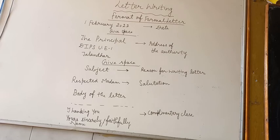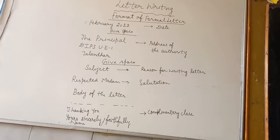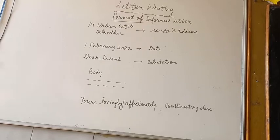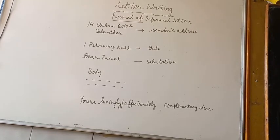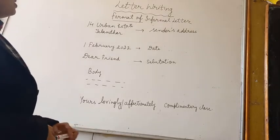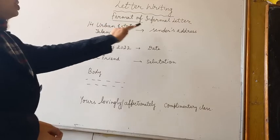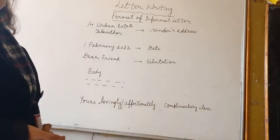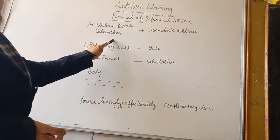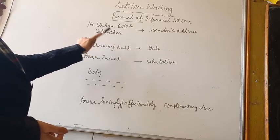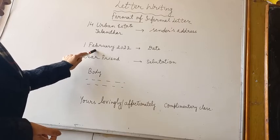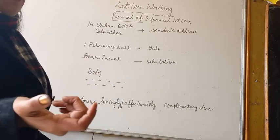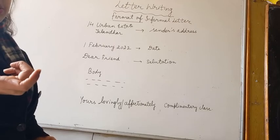Now let's move to the format of the informal letter. As informal letters are written within our relations, the format is: in the first lines you write the sender's address — the address of the person who is writing the letter. Then leave a line, then put today's current date. Then after that, the salutation — Dear Friend, Dear Mother, Dear Father. Note that an informal letter does not contain any subject.